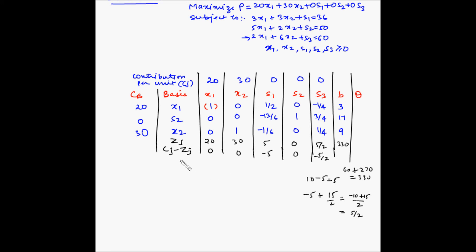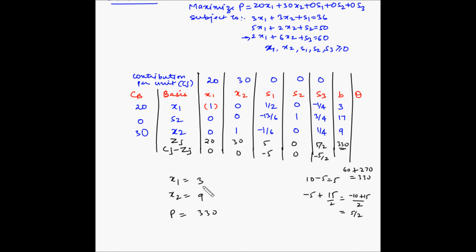Now let us find the solution — the values of X1 and X2. X1 equals 3, X2 equals 9, and the profit equals 330. So basically the manufacturer should make 3 chairs and 9 tables, and that is when the profit will be maximized at 330 rupees.